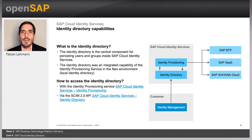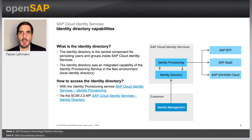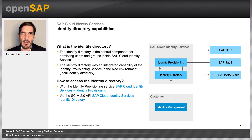The identity directory is the central component for persisting users and groups. When you replicate users, you read them from the identity directory via IPS and replicate them into a SaaS solution. Or you can connect an identity management system and use the SCIM API to create users in SAP Cloud Identity Services.